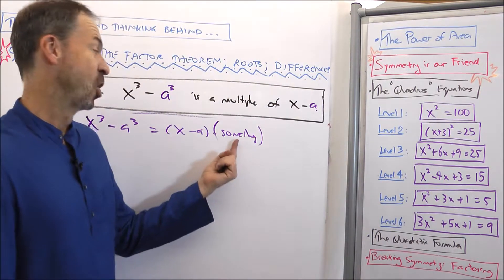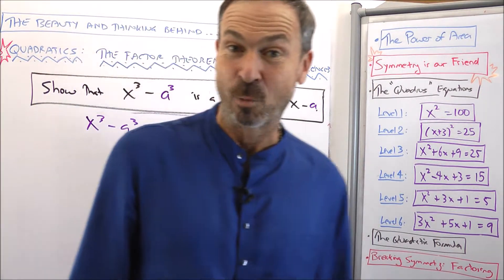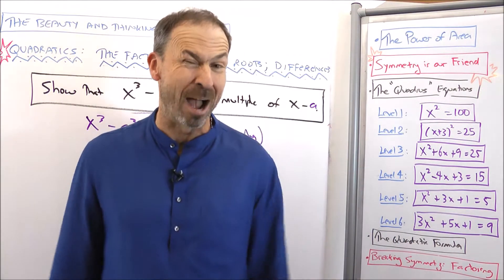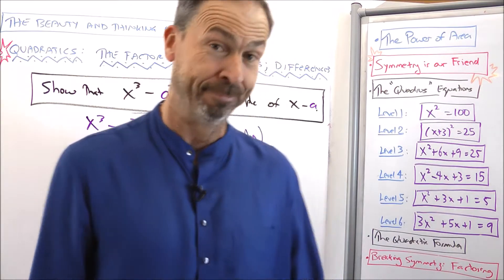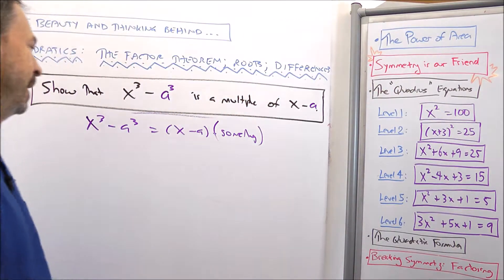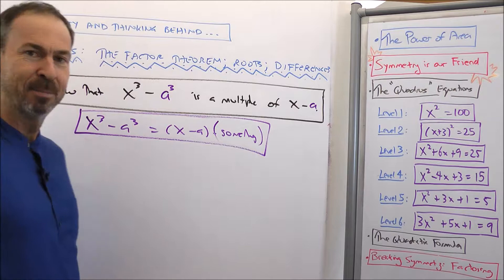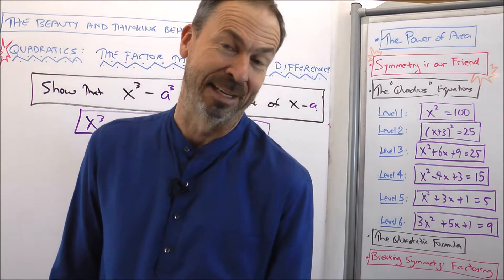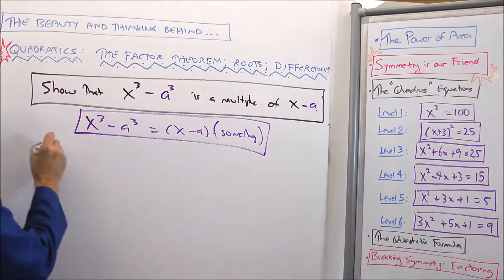Now, if you want to actually know what the something is, we can work it out. In fact, some books might want you to memorize this formula. I don't know why, but okay. This is usually good enough for me, just know it's (x minus a) times something, but let's work out the something now, just for fun.